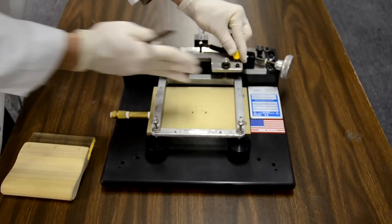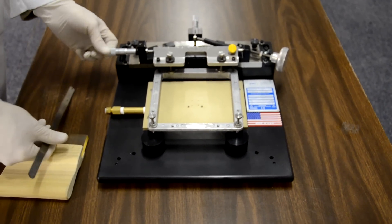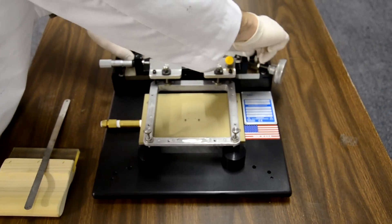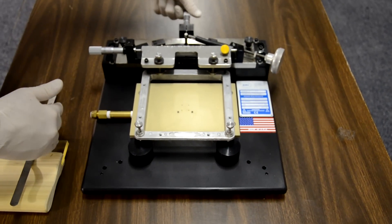We have X adjustment for screen positioning here. You can see the screen moving in this direction. We also have Y adjustment with locks. You can see it moving in Y.